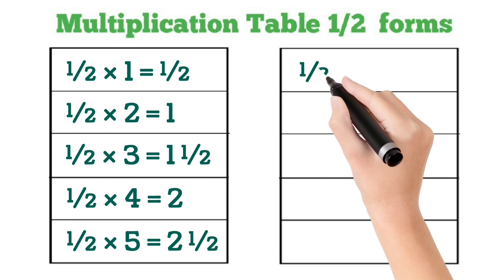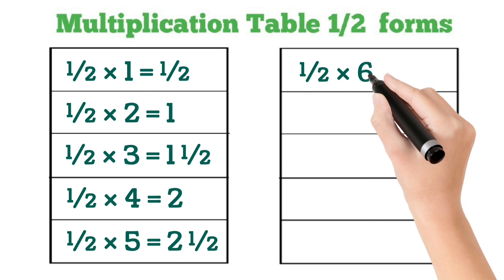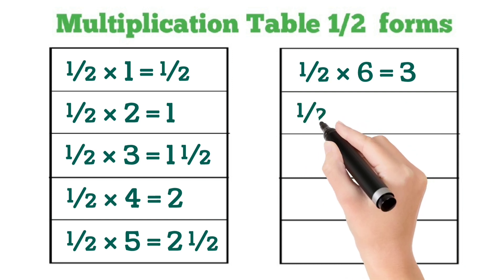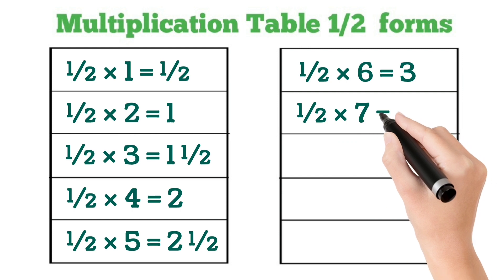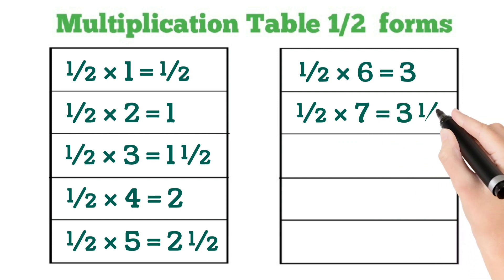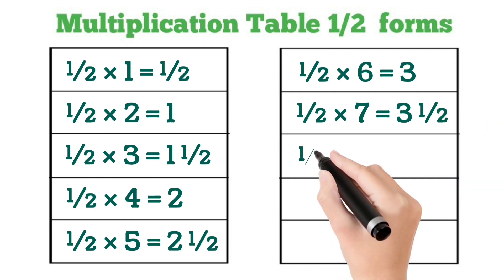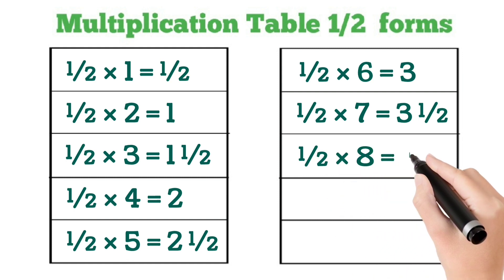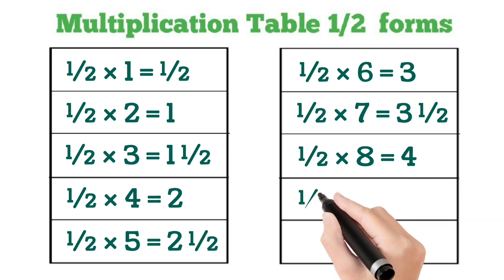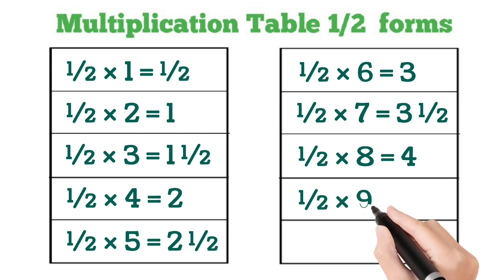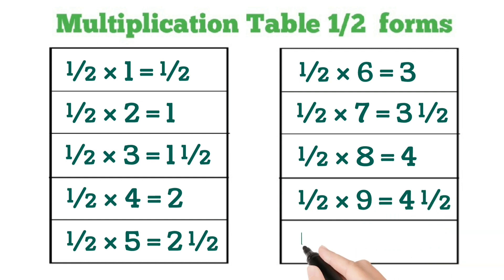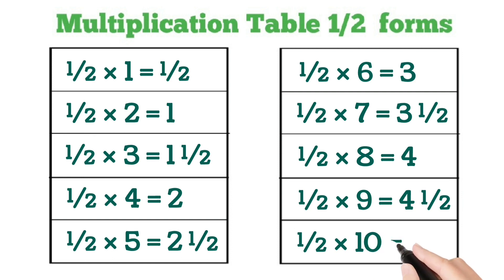1 by 2 multiplied by 6 is equal to 3. 1 by 2 multiplied by 7 is equal to 3 and 1 by 2. 1 by 2 multiplied by 8 is equal to 4. 1 by 2 multiplied by 9 is equal to 4 and 1 by 2. 1 by 2 multiplied by 10 is equal to 5.